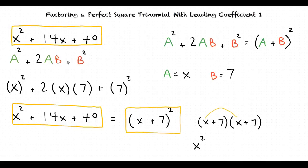x times x equals x squared plus x times 7 equals 7x plus 7 times x equals 7x plus 7 times 7 equals 49. 7x plus 7x equals 14x, so our polynomial simplifies to x squared plus 14x plus 49. We can see that our answers do match up, so now we can be sure that our answer is correct.